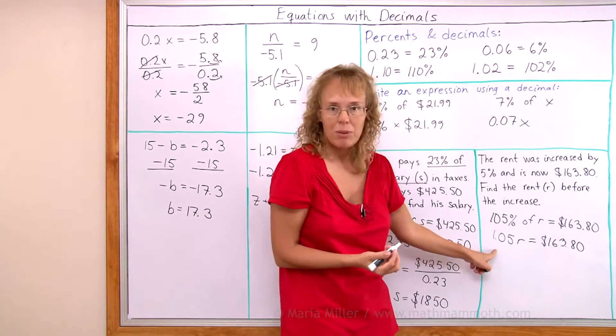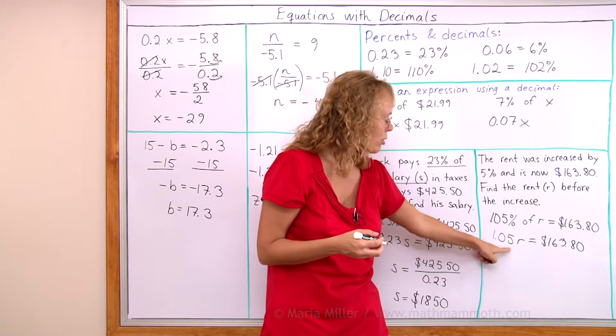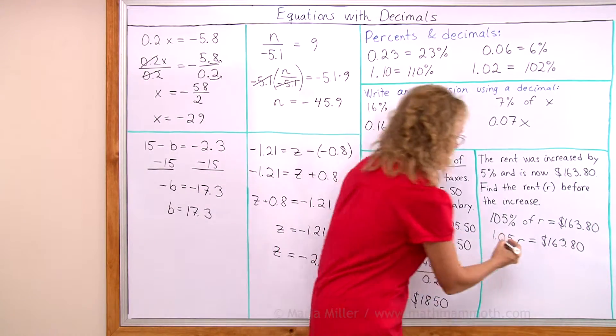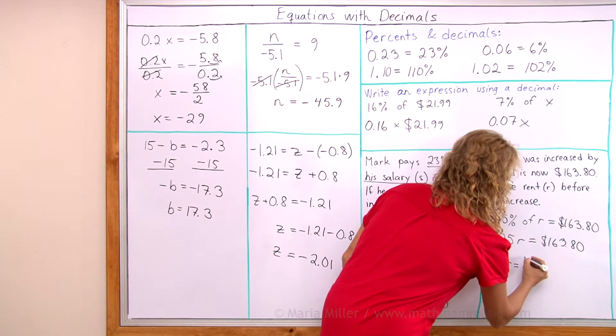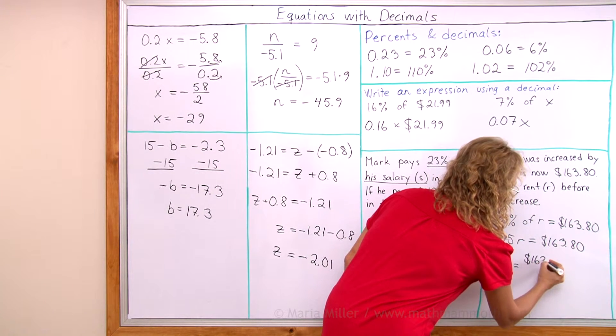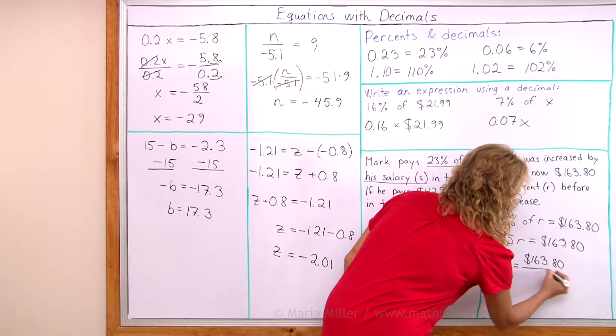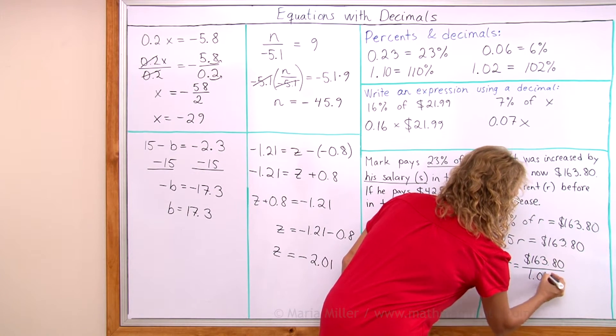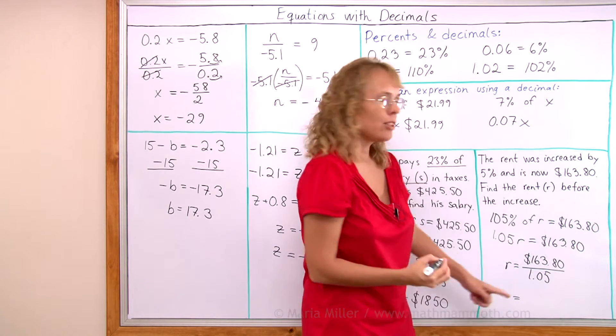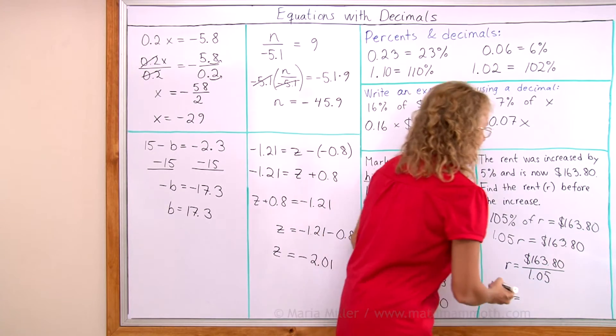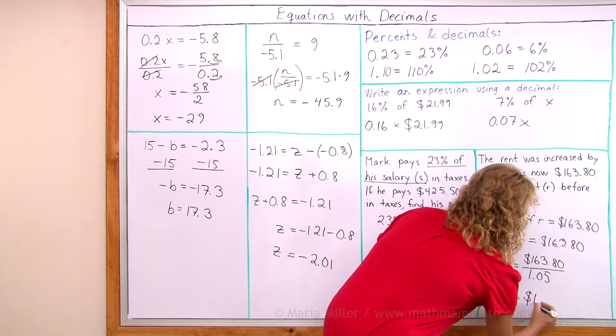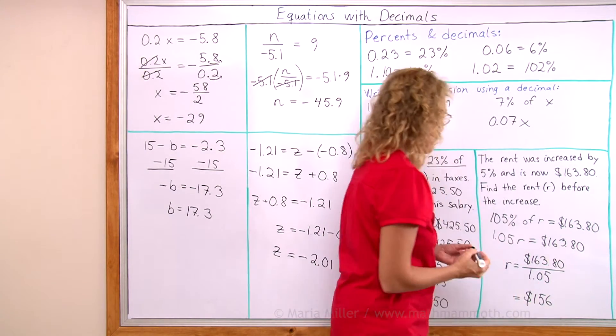Again, it is a multiplication equation, so we divide both sides by 1.05. And we get R equals $163.80 divided by 1.05. And that calculator is useful for that. And we will get $156 from that calculation.